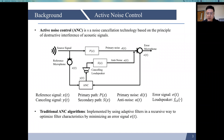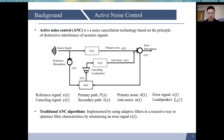ANC is a noise cancellation technology based on the principle of destructive interference of acoustic signals. A typical feedforward ANC system consists of a reference microphone, a cancelling loudspeaker, and an error microphone. The reference signal XT is picked up by the reference microphone. The cancelling signal YT generated by the ANC is passed through the cancelling loudspeaker and the secondary path to generate the antinoise AT. The goal of the ANC system is to generate an antinoise with the same amplitude but opposite phase as the primary noise DT, which is then able to cancel the primary noise when both signals interfere.